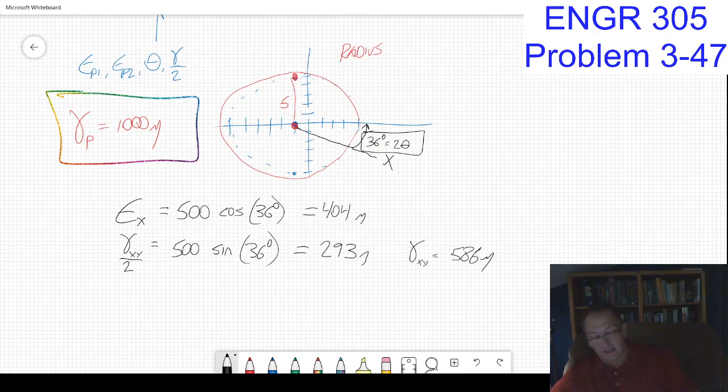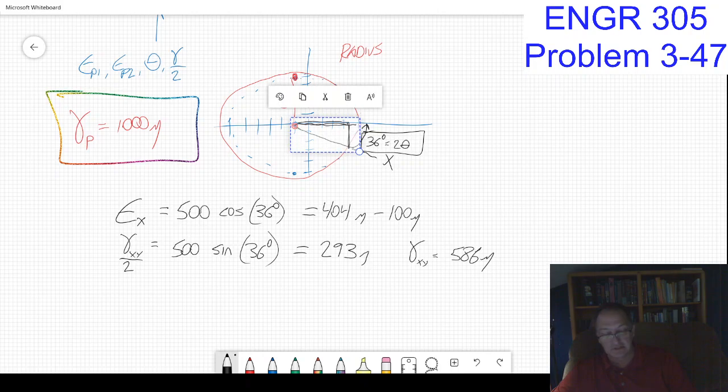I punched that in and got answers, but this is wrong because I have to take that and subtract the center, which is minus 100 micro, because it doesn't start at zero. So I've got to subtract the 100 micro, and I'm going to get 304 micro.